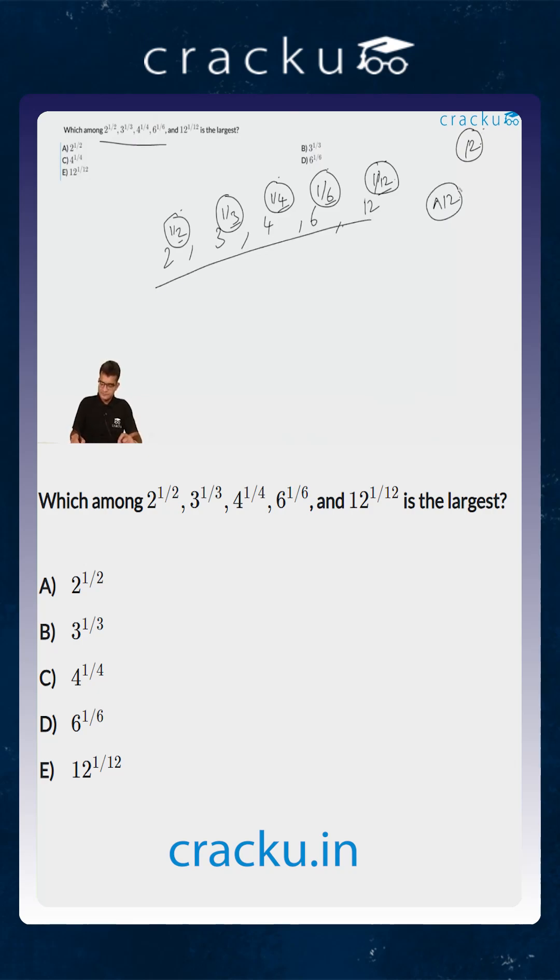So we will raise each one of them to the power of 12 and then we will figure out which of them is the highest. 2 to the power 1/2 whole to the power 12 will become equal to 2 to the power 6. 3 to the power 1/3 whole to the power 12 will become equal to 3 to the power 4.